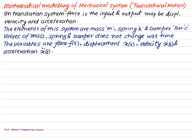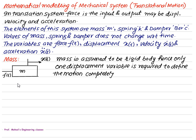x-double-dot(t), which is the second derivative of displacement. Now let's understand the concept of impedance for mass, spring, and damper. Consider a mass m acted upon by force f(t) with displacement x(t). Mass is assumed to be a rigid body, hence only one displacement is required to define the motion completely.